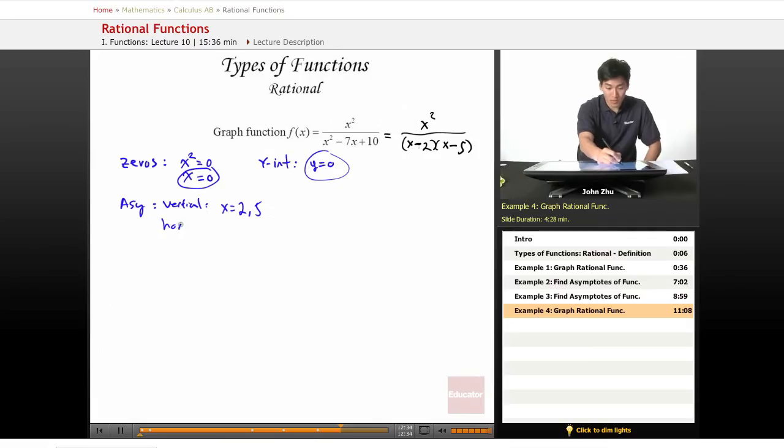If we look for the horizontal, once again, we have x squared over x squared, which means 2 over 2 equals 1. So we have a horizontal asymptote at y equals 1.